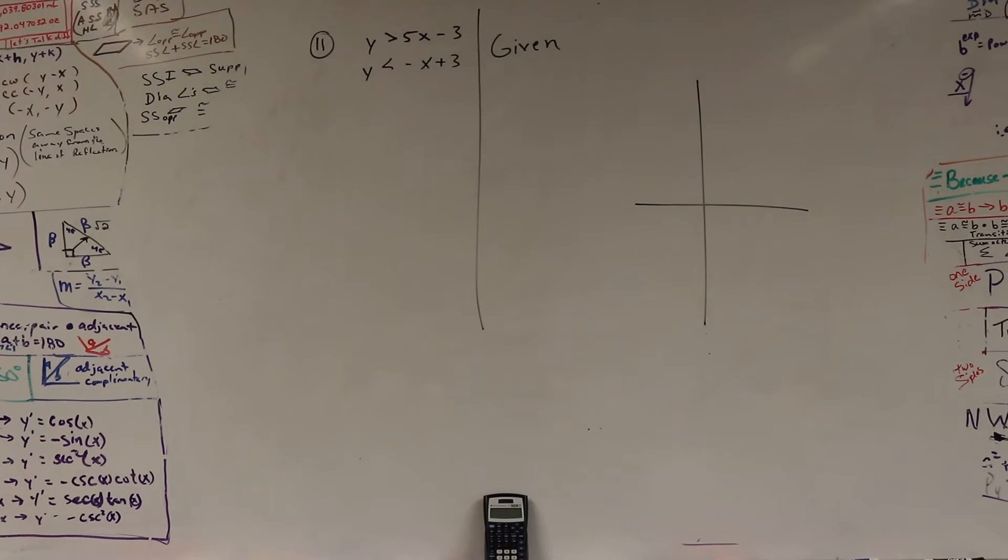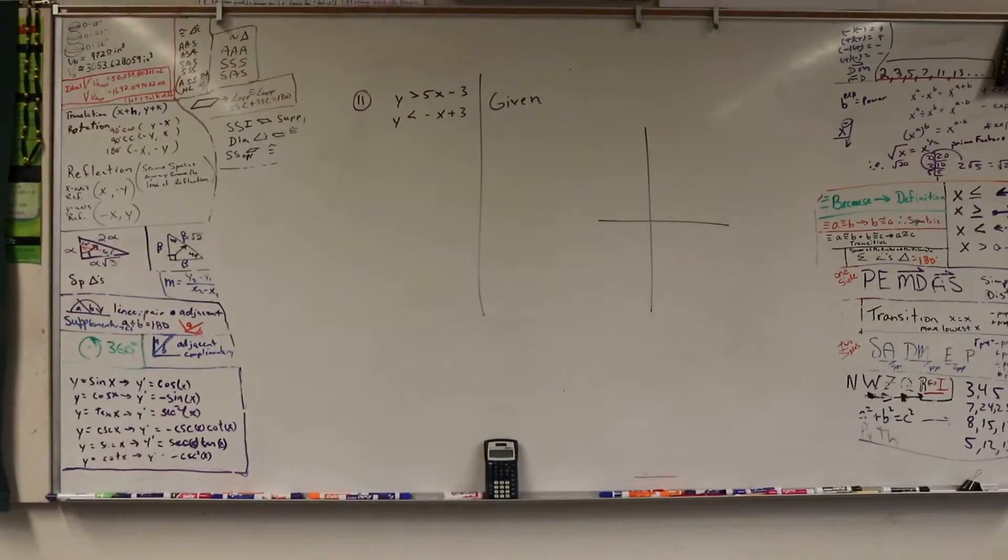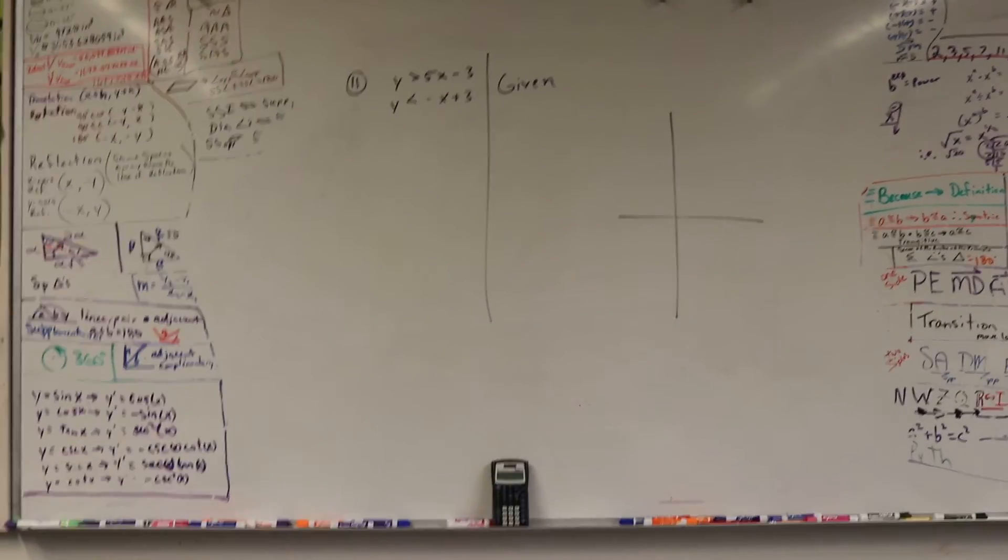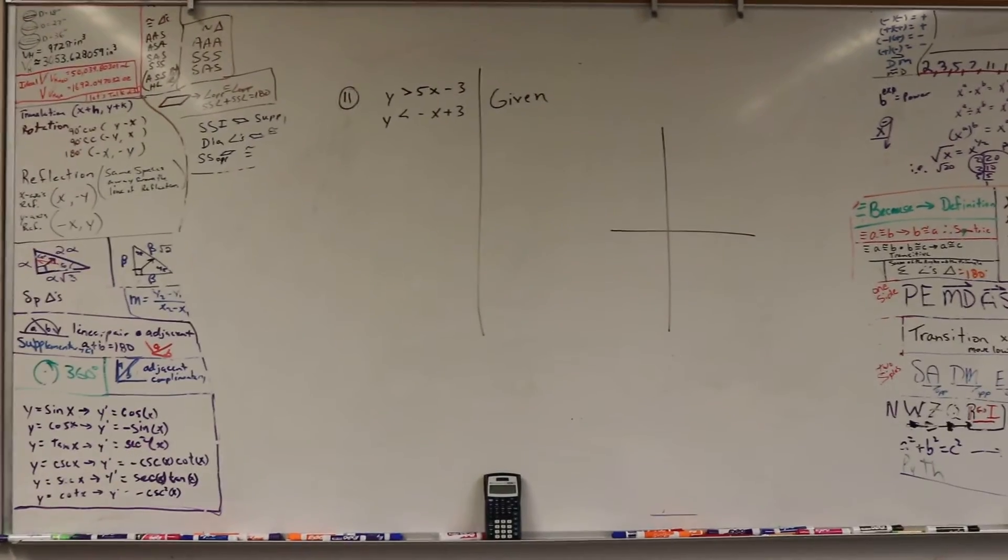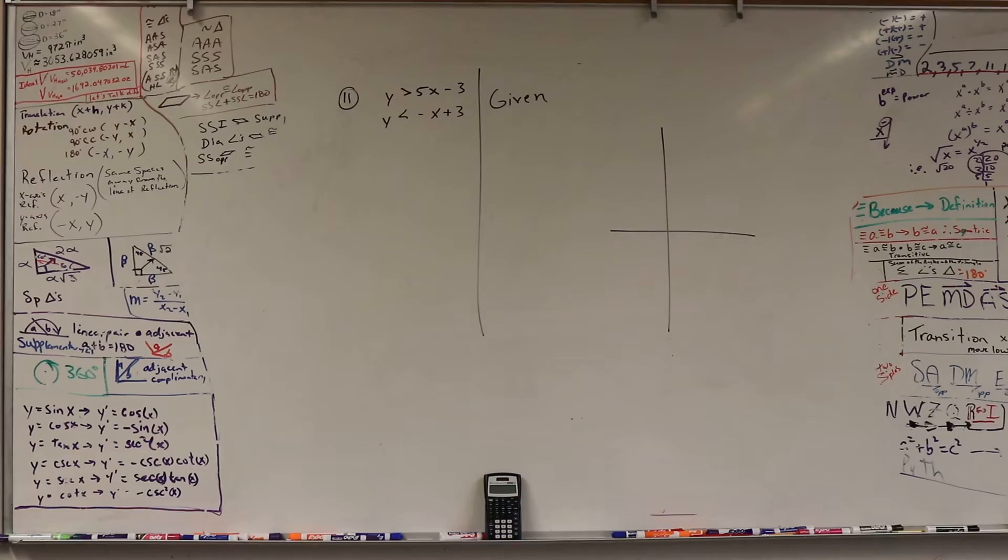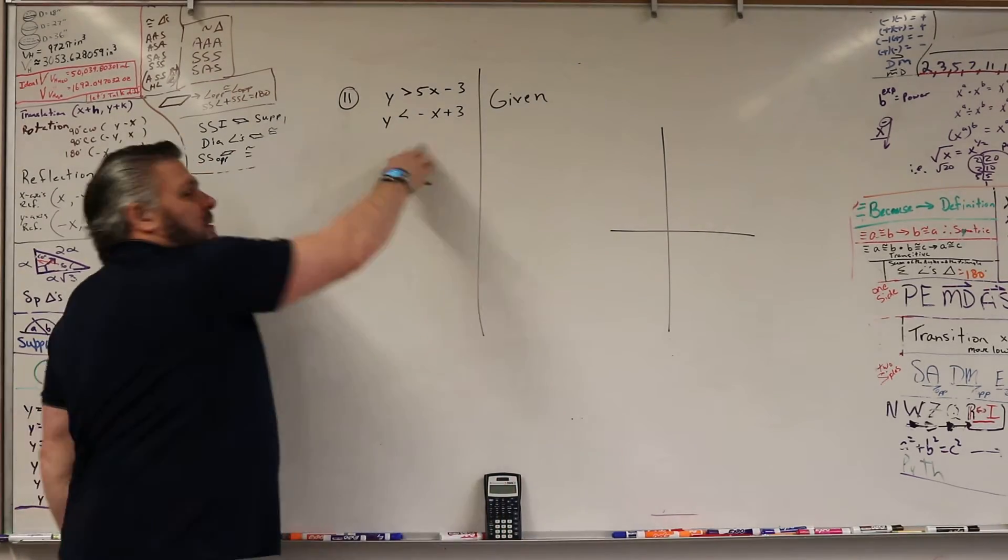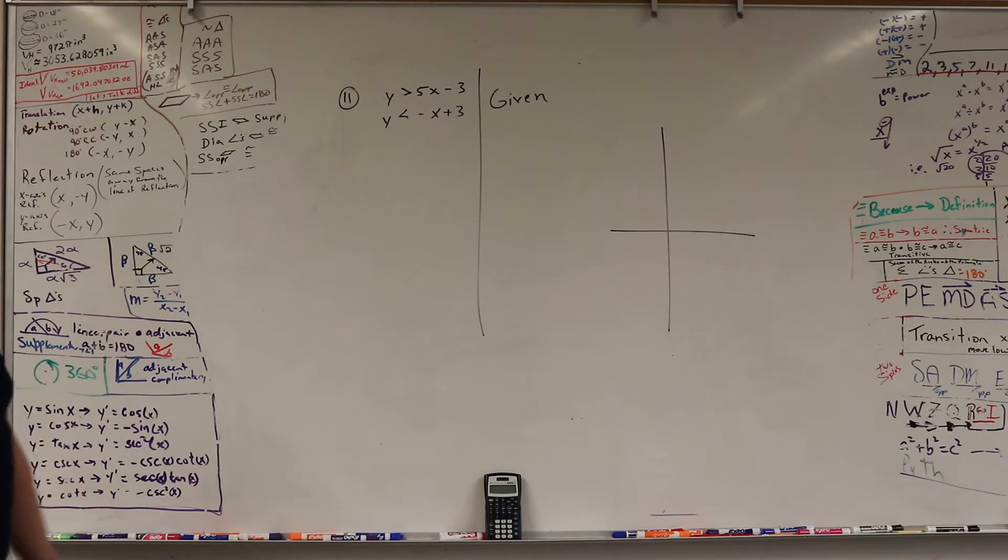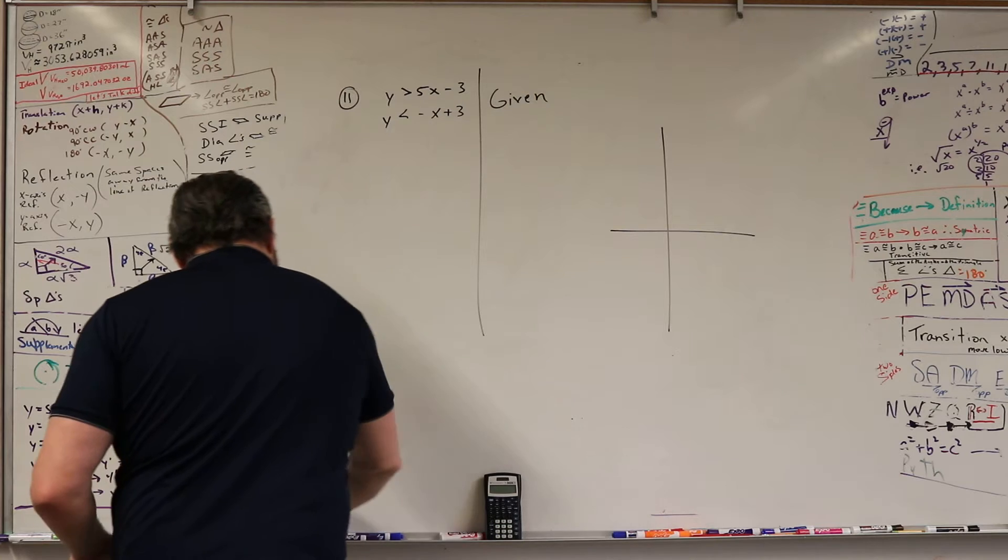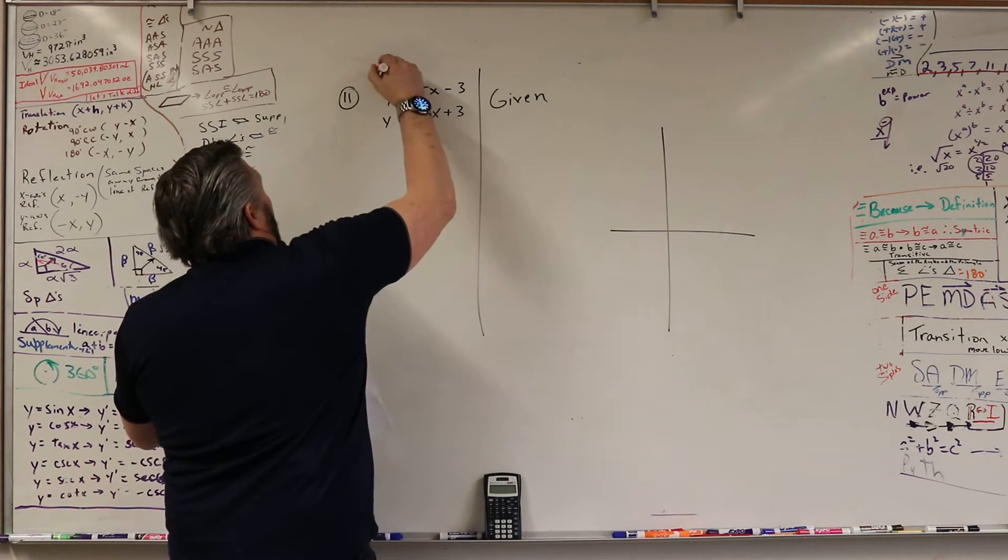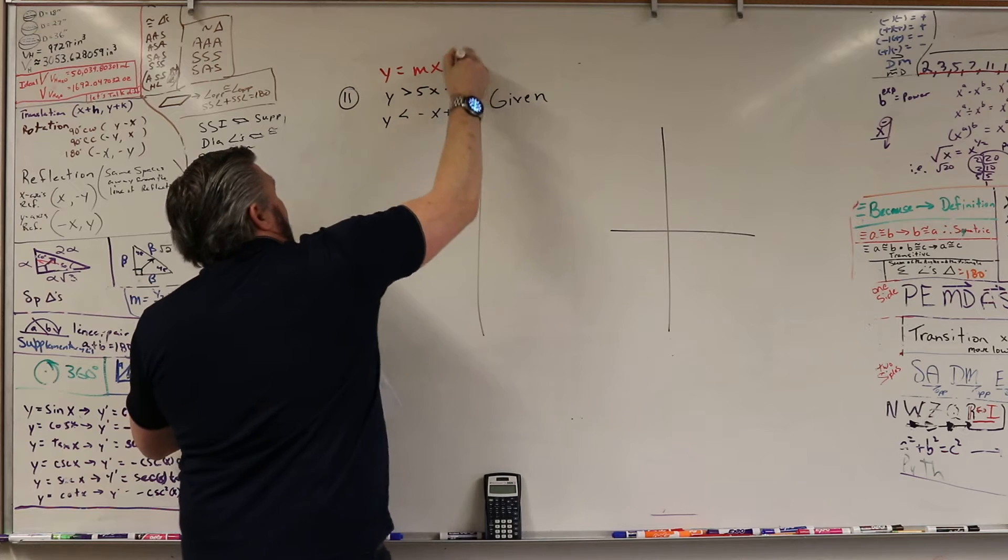So, number 11, we have a given. Let's make sure that we're not too close up. Okay, so number 11, we have a given. Now look, they're already in y equals mx plus b form. They are already set up as y equals mx plus b.